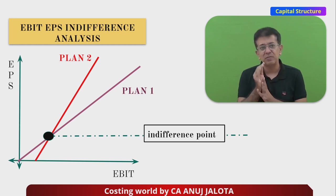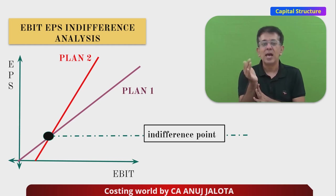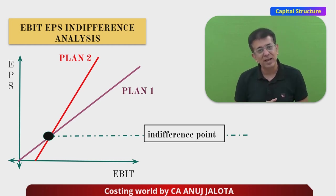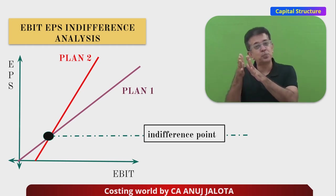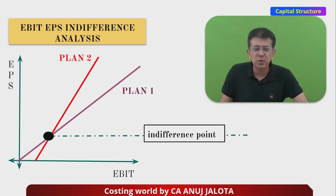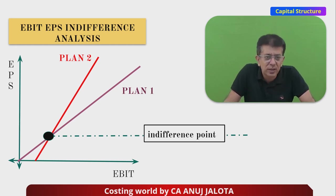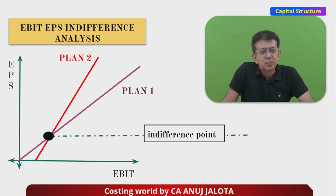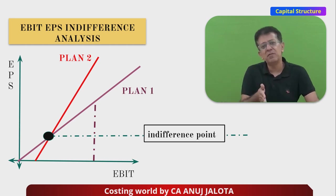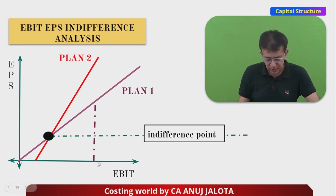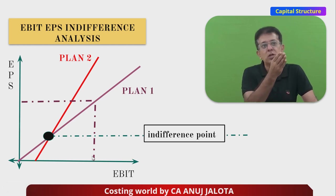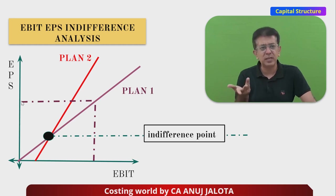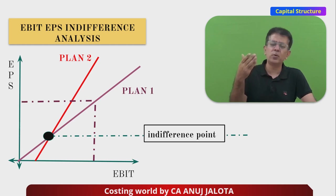Above the indifference point, one plan will be better; below it, another plan will be better. For example, if you go above the black circle, Plan Two will be higher — so Plan Two is better there. Below, Plan One will be better. This tells you at which level of EBIT which plan is preferable. Additionally, once the graph is made, you can find EPS at any level of EBIT by drawing a vertical line at that EBIT level and a horizontal line to the y-axis, which gives the EPS under that plan.